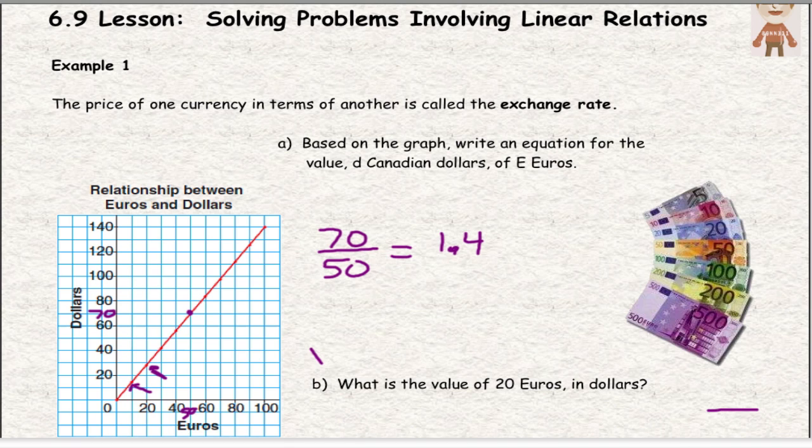So it says here in B, what is the value of 20 euros in dollars? If I had 20 euros and I multiply it by 1.4, I get 28. So that means 20 euros is actually worth 28 Canadian dollars.